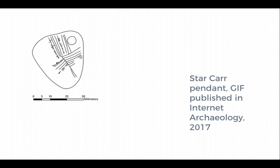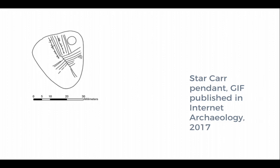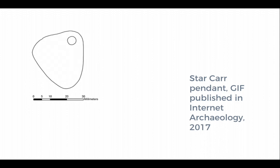This is another figure produced of the Star Car pendant, showing the different phases of drawing on a very small pendant — as you can see from the scale. It shows the first lines that were created, then the second through to the eleventh phase, and then you swear eventually. The meaning of this has been debated, but it was really useful to actually see how the drawing had evolved over time.